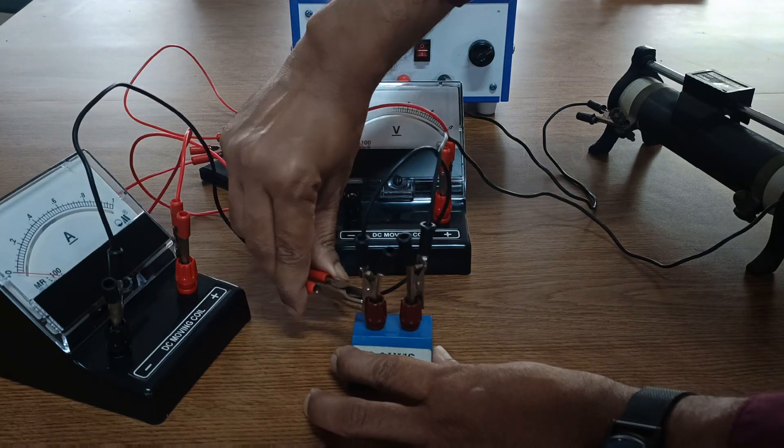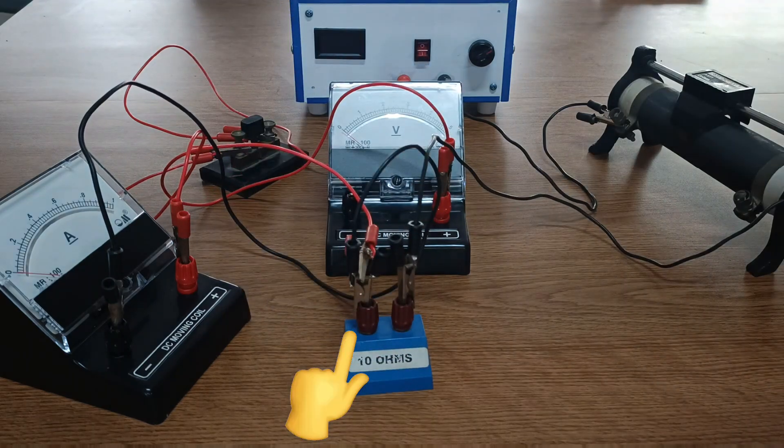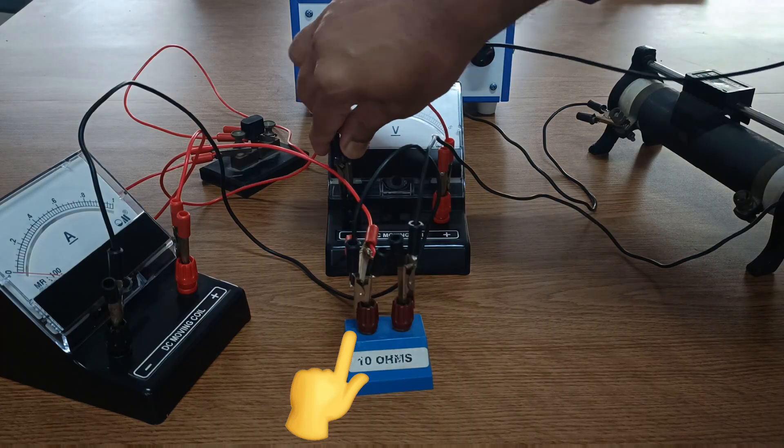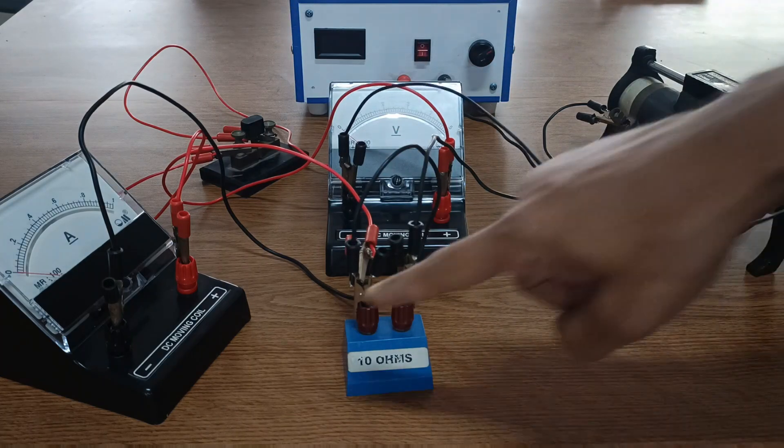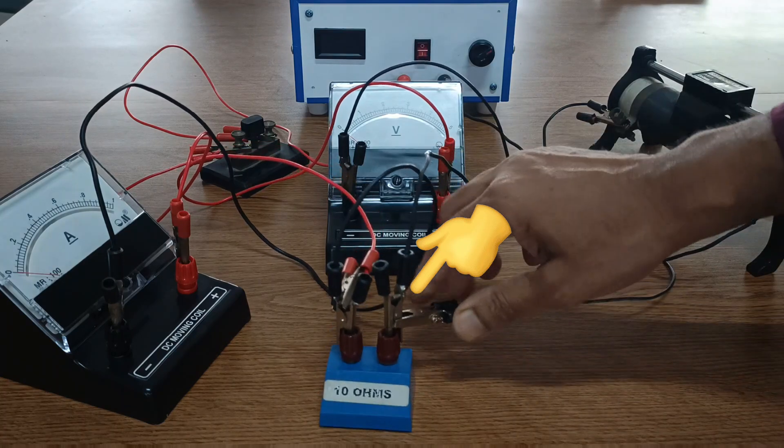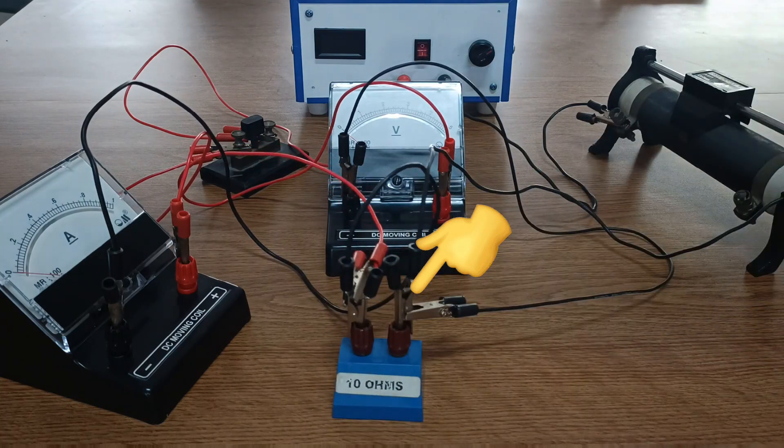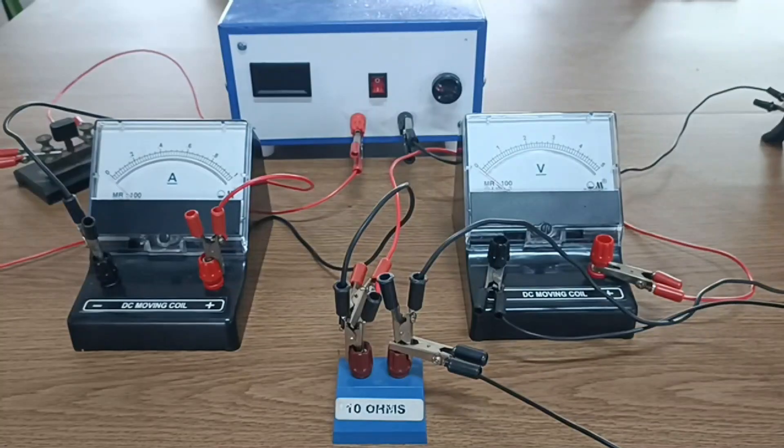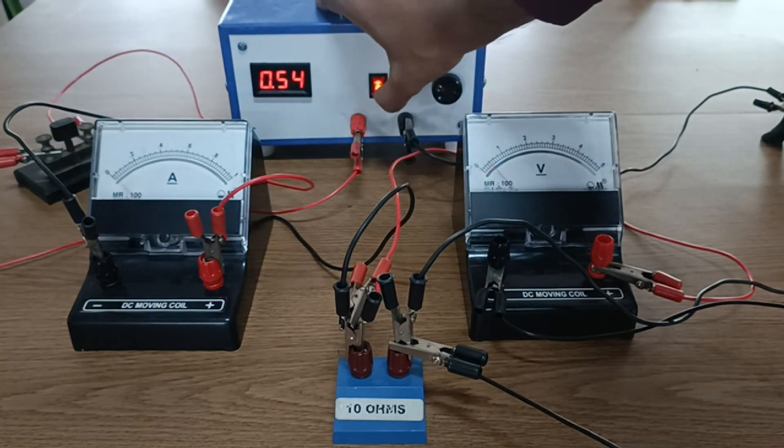The positive red end of the voltmeter is to be connected with the terminal of the resistance through which the current enters. The negative black end of the voltmeter is to be connected with the end of the resistor through which the current leaves. Let's turn on the battery and verify our connections.